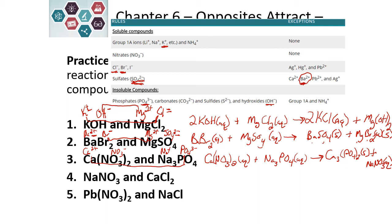Now we balance the chemical reaction. Starting with the most complicated compound, calcium phosphate requires three calcium on the right side, so we need three calcium on the left — putting a 3 in front of Ca(NO₃)₂. That gives us six nitrates (3×2=6), so we need six nitrates on the right side. Six nitrates on the right gives us six sodium, so we put a 2 in front of Na₃PO₄. Now we have two phosphates on the left and two phosphates on the right — our reaction is balanced.